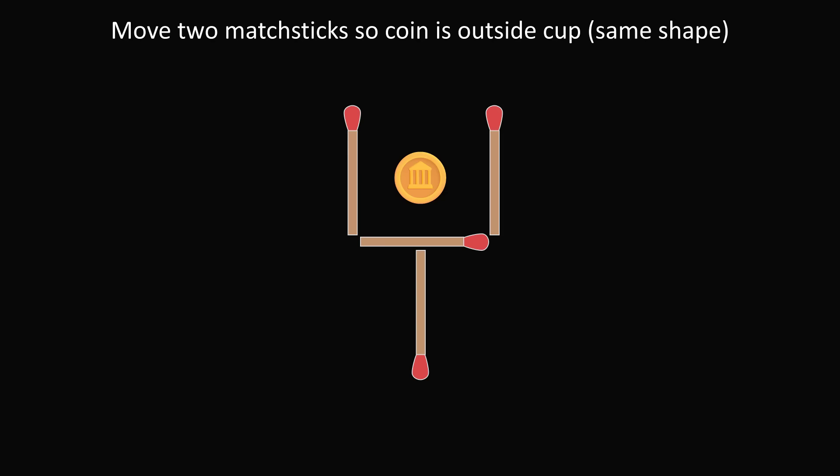So, here's one way to solve the problem. You take this matchstick and you slide it over to become the base of the cup. Then we'll take this matchstick and we will form the other side of the cup. So, we now have the shape of the cup and the coin is outside of this upside-down cup. So, that's the standard way to solve this problem.